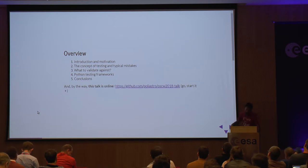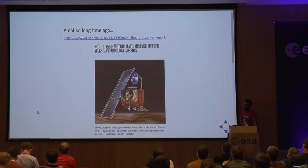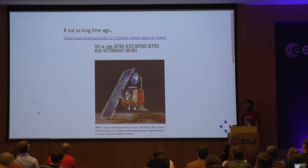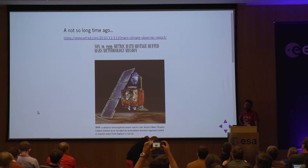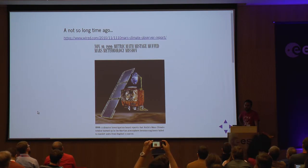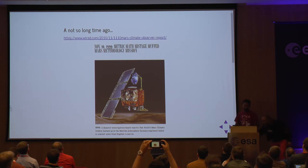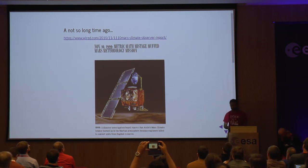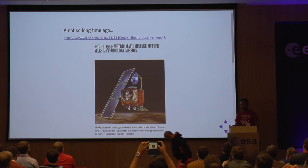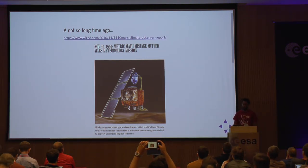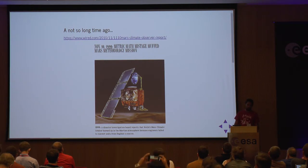Not so long ago, you might know this example: the Mars Climate Orbiter performed what we call in technical terms an unscheduled little braking — and in non-technical terms, it crashed. The root cause analysis determined that one contractor was using the metric system and the other was using the imperial system. That's bad. That's the typical error we don't want to make.